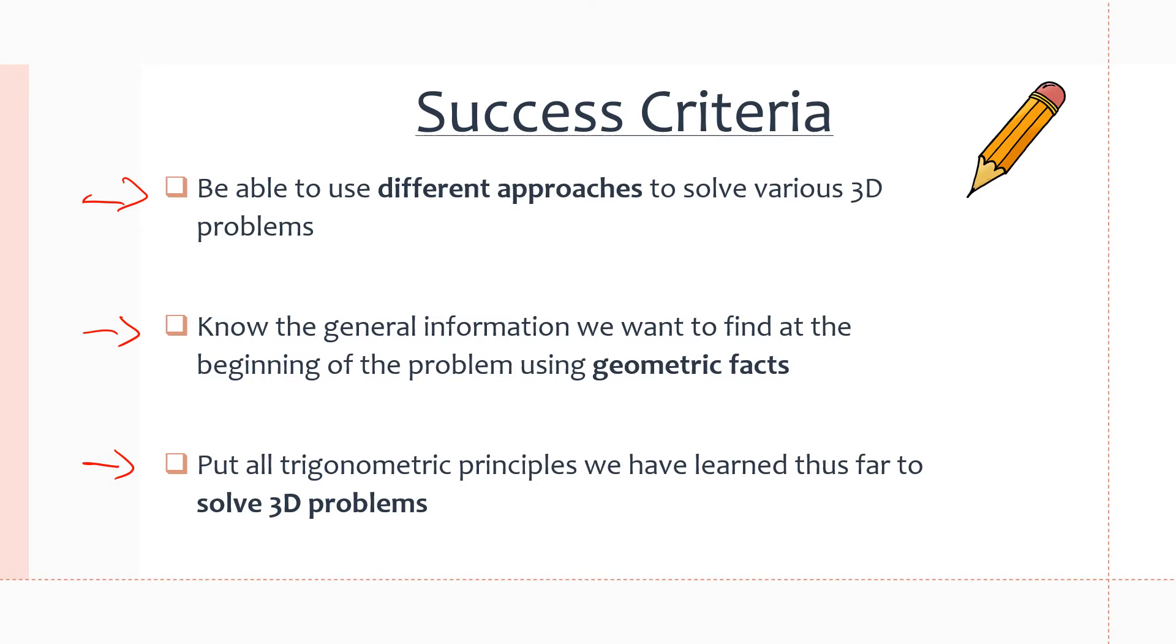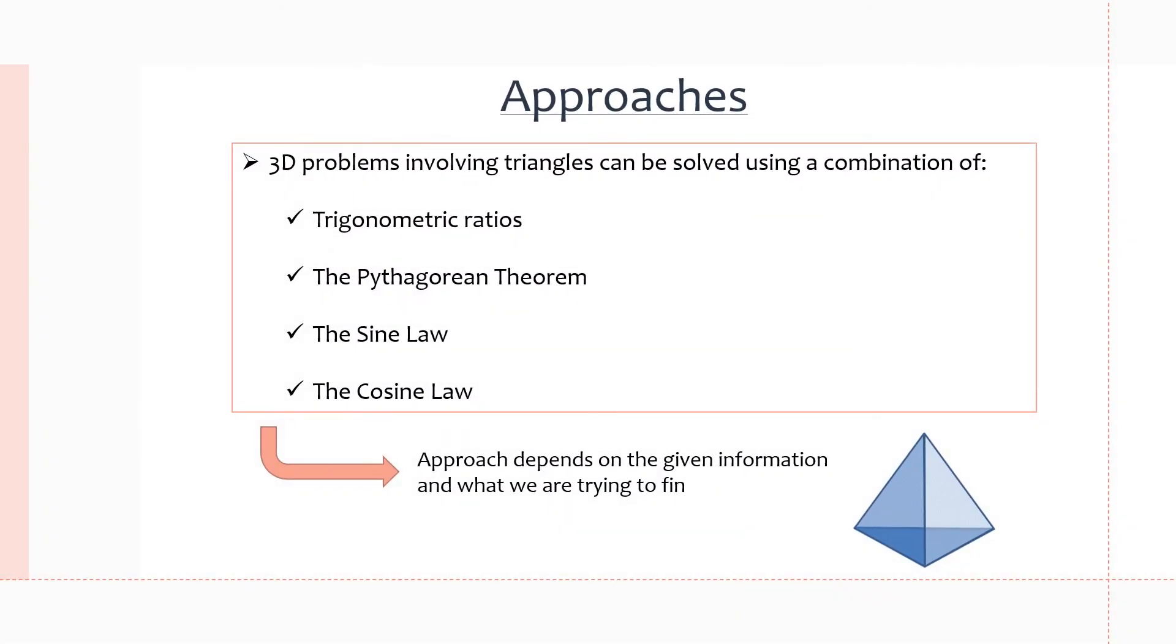So let's go. Here we can see the different approaches that we can use while solving 3D problems: trigonometric ratios, the Pythagorean theorem, the sine law, and the cosine law. These are everything we've learned so far and this is basically all we use when solving these 3D problems in addition to our general geometric facts. But the approach we use depends totally on the problem, and sometimes we could be using a combination of these approaches.